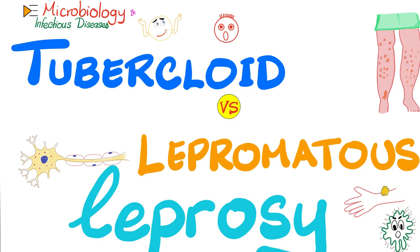Tuberculoid — 'oid' means similar to — and tubercle is the granuloma of tuberculosis, because tuberculoid leprosy has granuloma induration. But lepromatous leprosy does not. So the question is: why does tuberculoid leprosy have granuloma, but not lepromatous leprosy?